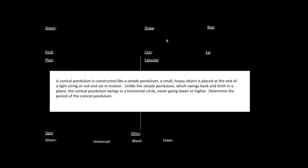I want to talk about a conical pendulum and see how this works out. What a conical pendulum is: if you have some roof or something like that and you hang a ball from a string or a light rod, you can make it run around in a circle like this. So you can spin it in a circle — you played tetherball when you were a kid. So you have a length L here and a radius R for this circle that the ball is going around.